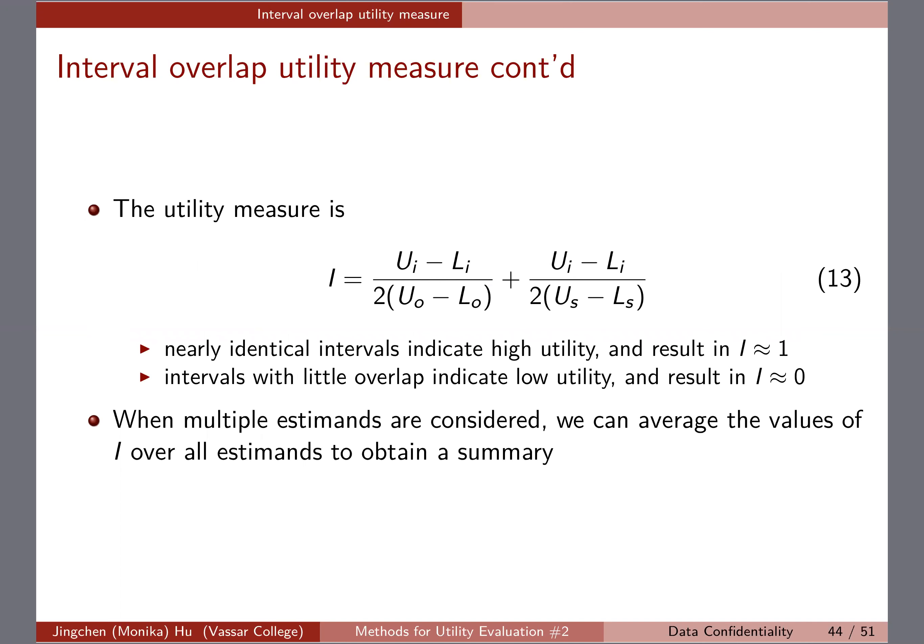Then the measure is called I. What they do is they're looking at the difference between the intersection, which is pretty much the length of the confidence interval. We're looking at the length with respect to the original confidence interval length and the synthetic confidence interval length.